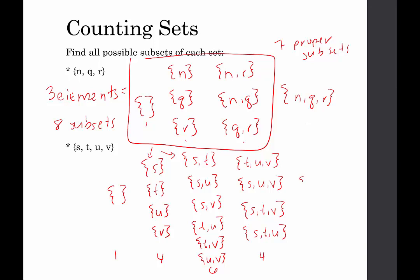And lastly we have the set itself: {s, t, u, v}. So we have one plus four plus six plus four plus one — that's ten plus six, giving us 16 subsets when there are four elements. If we're curious, we cut out one of those, because that would be the number of proper subsets, so there would be 15 proper subsets.